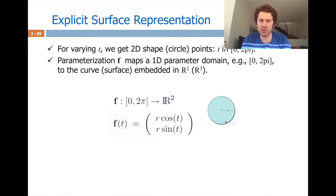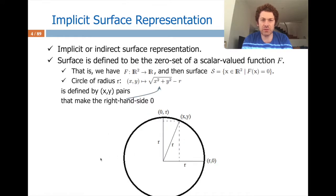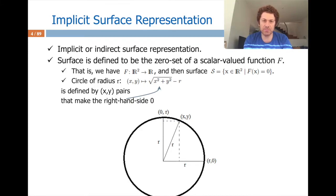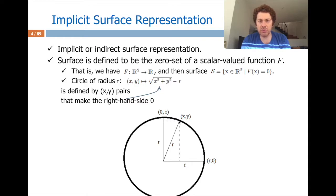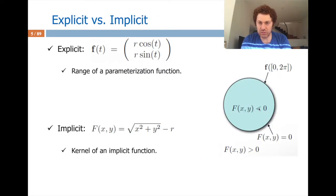Implicit representation is a totally different idea — here the surface is defined to be the zero set of a scalar-valued function f. Given this function, the points that set it to zero are the points I'm interested in. For a circle of radius r, those are the points making the function sqrt(x² + y²) − r equal to zero. Plugging a boundary value gives zero; a value inside gives negative, and outside gives positive.